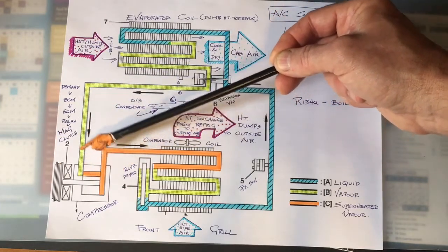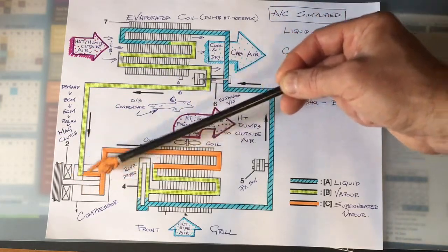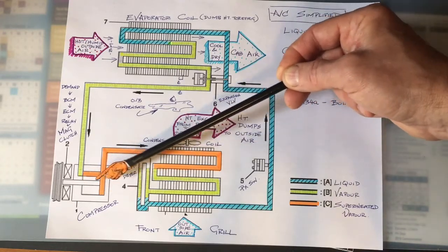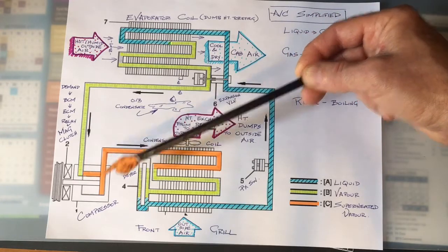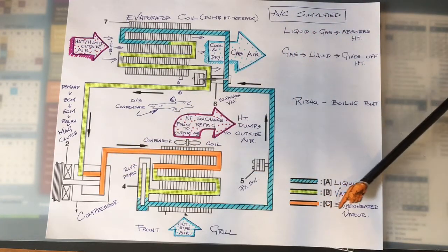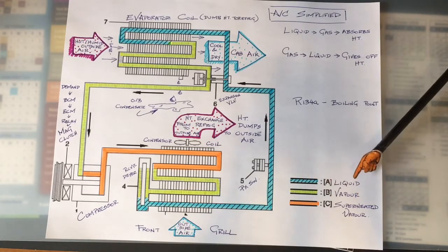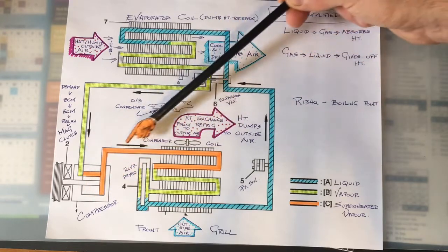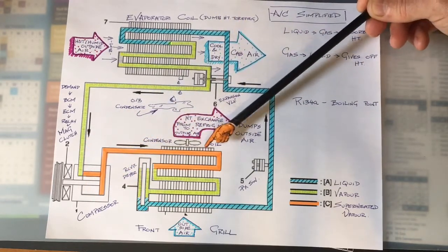The compressor takes that return gas in a low pressure state and compresses it. Anytime you up the pressure of a gas, the temperature increases. The orange line here is a superheated vapor, the yellow is just a vapor state, and the blue is liquid state in the schematic, so we can clearly understand it.